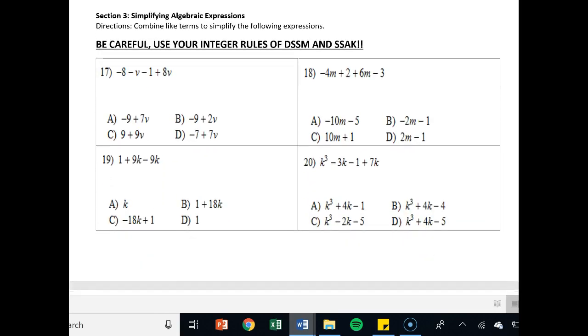Section 3. It says simplifying algebraic expressions. Be careful. Use your integer rules, DSSM, SSKK, or just use a calculator. Here we go. When I go through, I see subtraction signs, plus negative, plus negative, and I'm looking for like terms. So negative 8 and negative 1. That's negative 9. Negative v and 8v. That's plus 7v. So a is my answer. I want to see that work tomorrow.